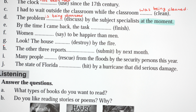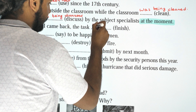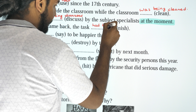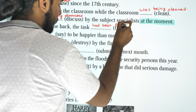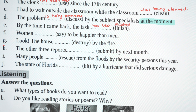By the time I came back — past perfect passive. The talks had been finished — had been plus verb 3. The talks had been finished by the time I came back. Women are said to be happier than men.